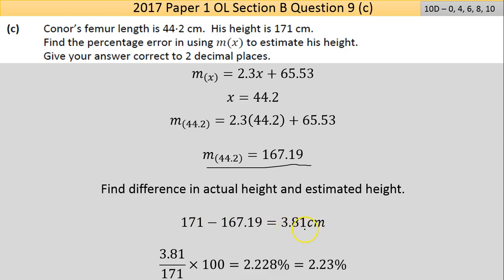The formula you'll use for this is the difference over the actual multiply by 100 to make a percentage. Doing the calculation, I get 2.228%, which rounds to two decimal places as 2.23%. It's fairly straightforward once you break it down.